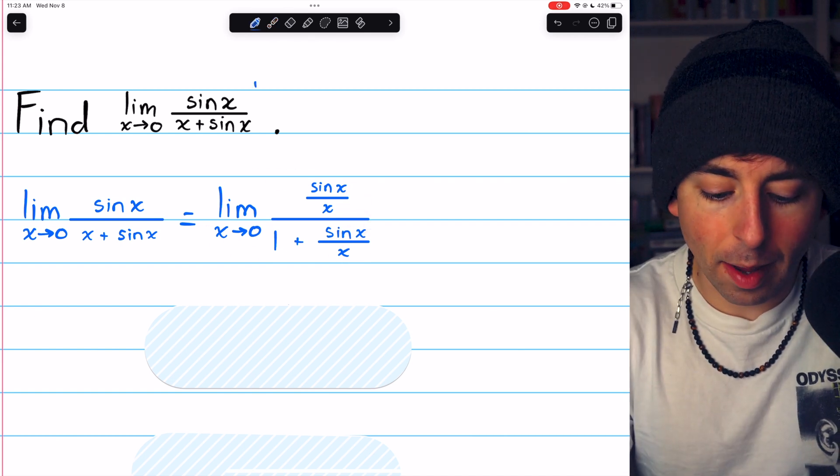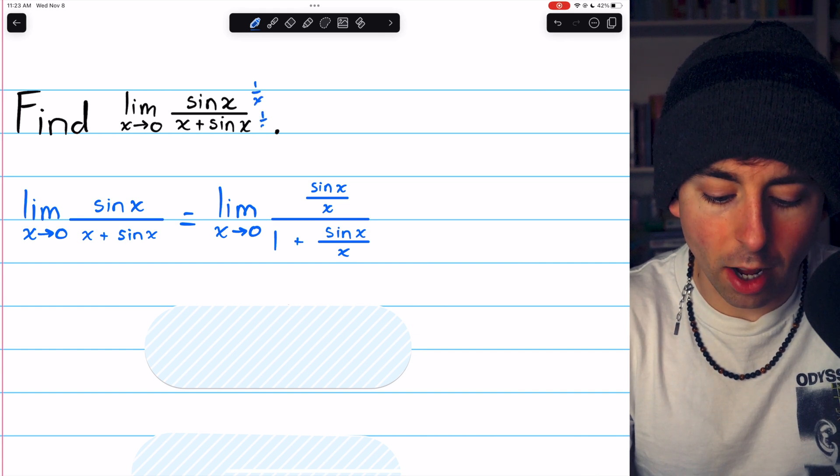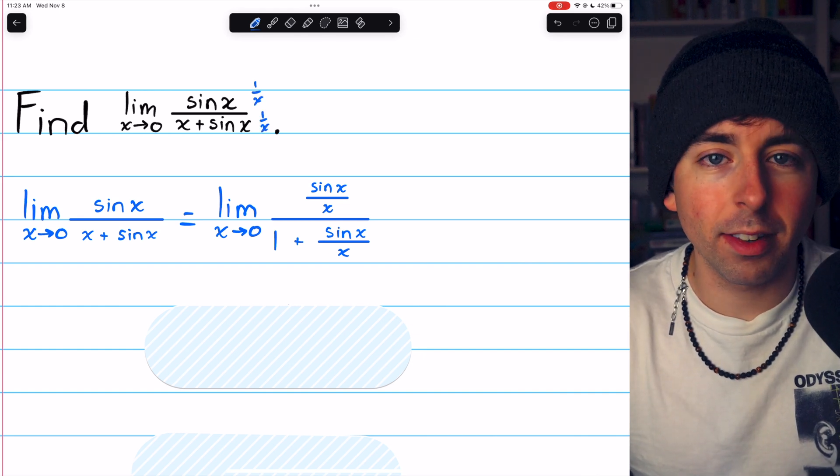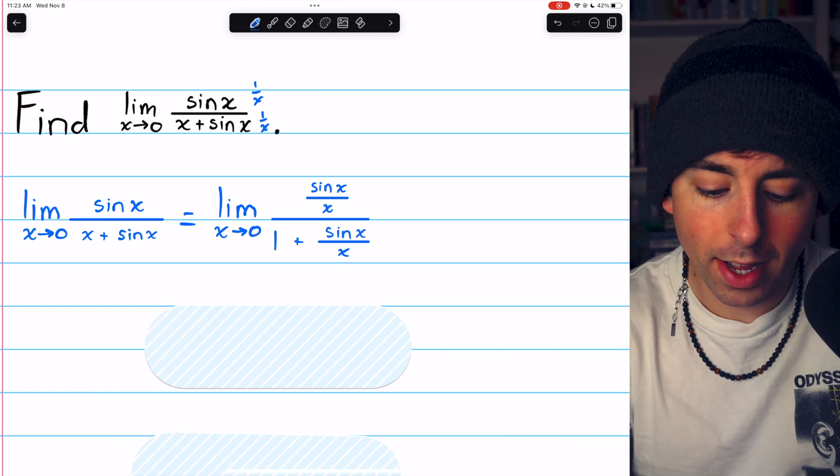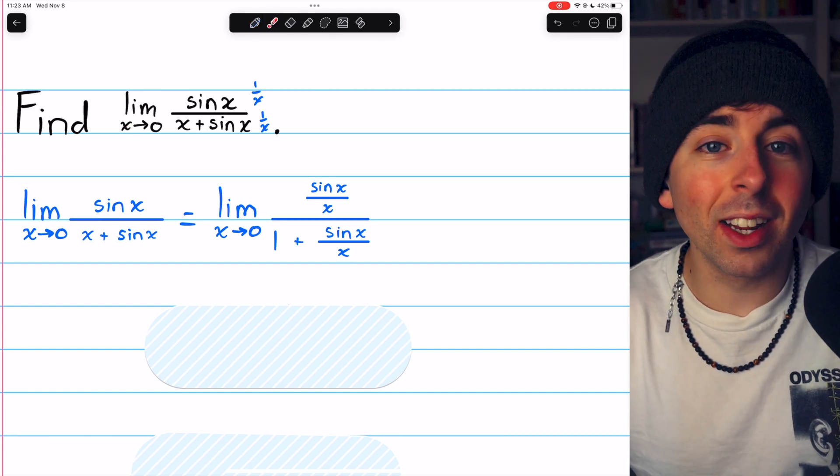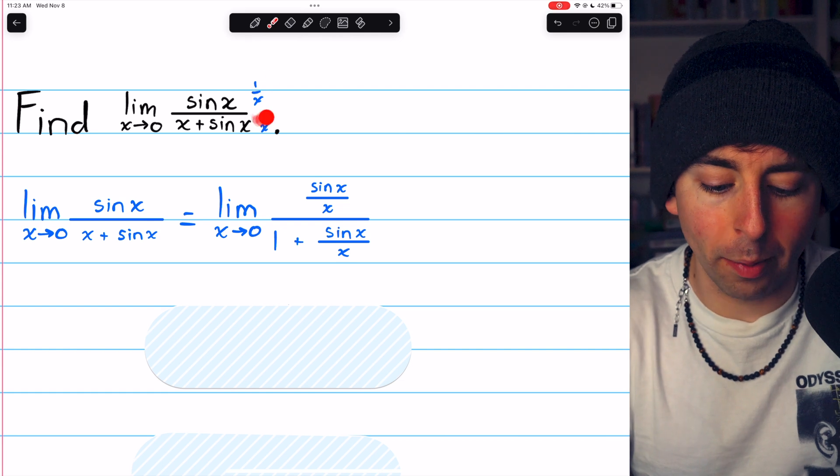And remember, this is an acceptable move because all we're doing is multiplying the top and bottom by one over x. So we're really just multiplying by one. And since x is approaching zero, we know it doesn't equal zero, so there's no problems here.